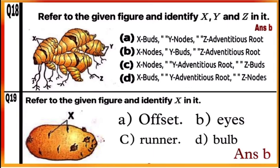Question 18: Refer to the given figure and identify X, Y, and Z in it. The given figure is of a modified stem — the rhizome of ginger. So the correct option is B.